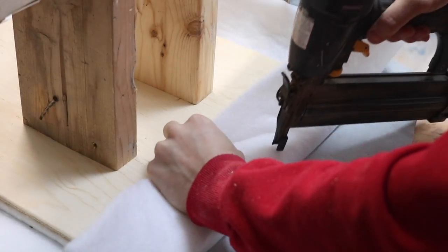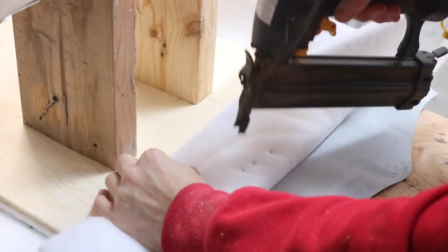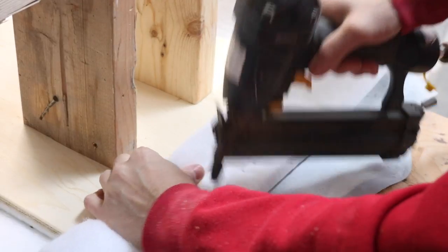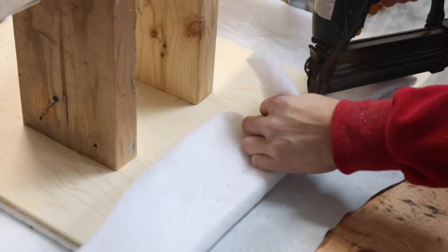Using some half inch staples, I started by folding over the batting and stapling it to the plywood base. Making sure to fold over the corners neatly and cutting off any excess as I go.